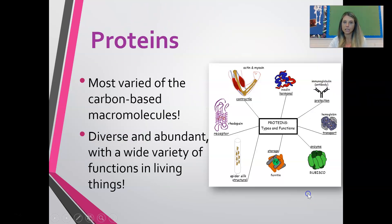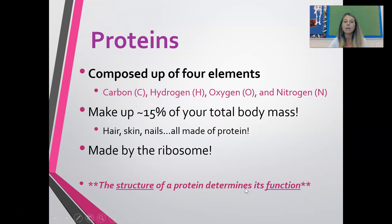Now we're going to get into proteins. Proteins are the most diverse and abundant macromolecule that all living organisms have — the most varied carbon-based molecules with a wide variety of functions. Everything from contracting the muscles in your body, to transporting oxygen in your blood, to spiders creating spider silk — that's all proteins. Proteins are composed of four elements: CHON — carbon, hydrogen, oxygen, and nitrogen. About 15% of your body's total mass is actually proteins. Your hair, skin, and nails are all made up of proteins.